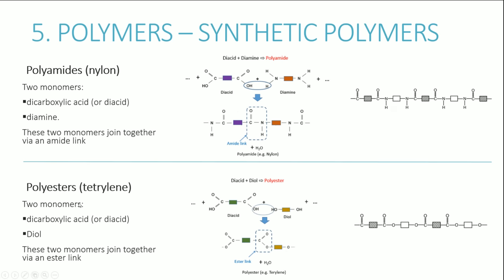For polyesters like terylene, the monomers are a dicarboxylic acid and a diol (which has two OH groups). The OH group of the carboxylic acid reacts with the H from the OH group of the diol, forming a direct carbon-oxygen bond — the ester link — and releasing water. Chaining these units together forms the polyester molecule.